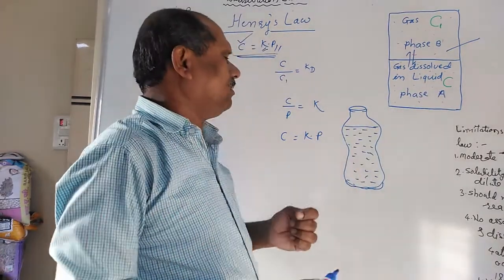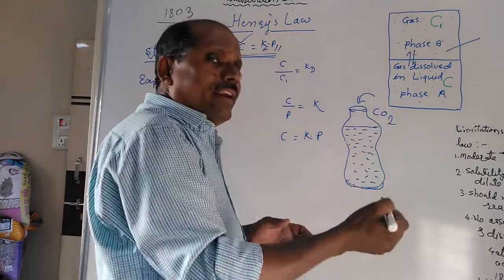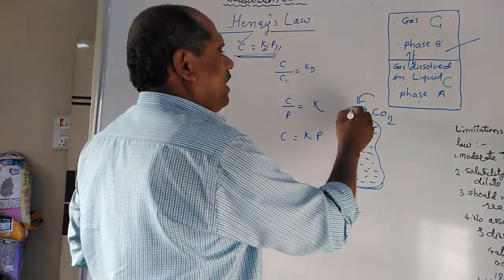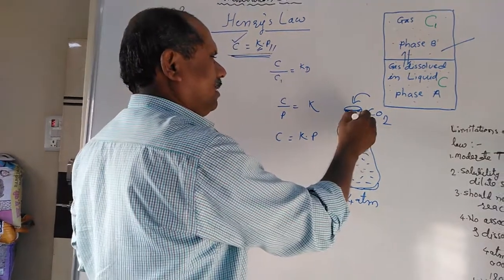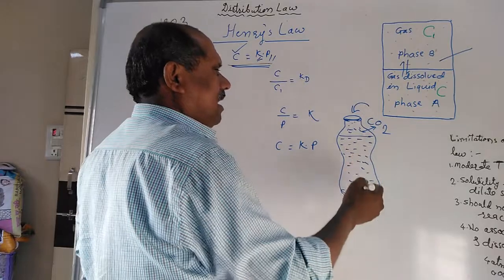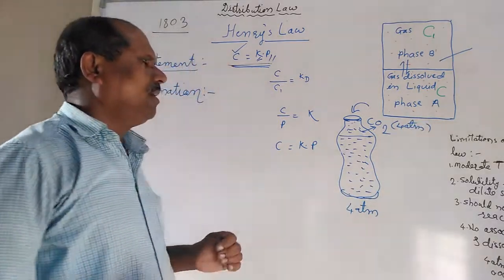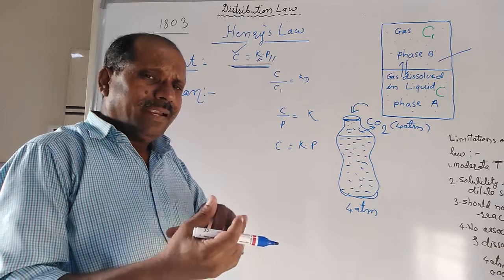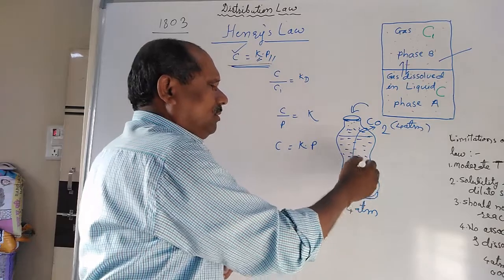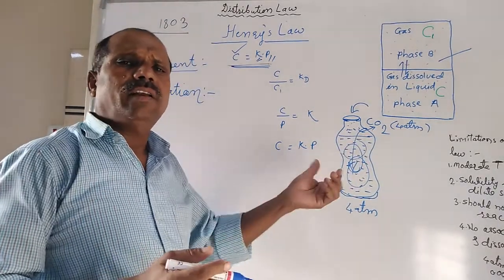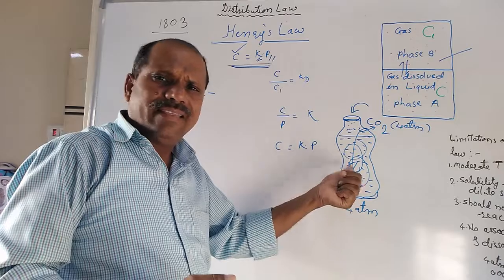In this bottle, the CO2 is dissolved or made soluble under near about 4 atmosphere pressure. The gas CO2 is under high atmosphere pressure, mixed with the liquid, and CO2 gets distributed into the liquid in that bottle.